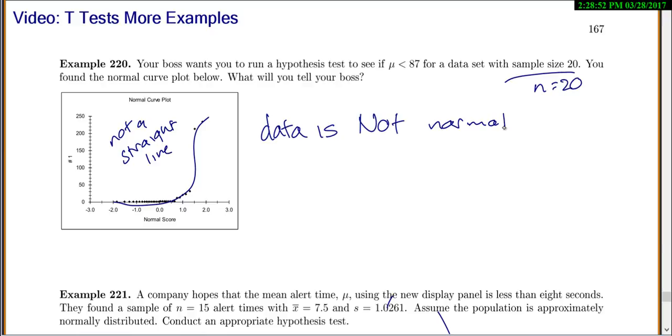Now it's okay if your data is not normal if you have a big sample size, but what's our sample size? Our sample size is only 20. So our data is not normal and we have a small sample size.